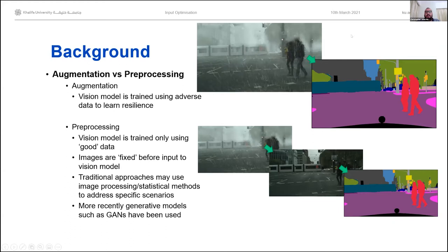Approaches for dealing with these conditions we broadly divide into two categories: augmentation and pre-processing. Augmentation is where you augment the training data — for example, if you're using a neural network to segment scenes, you might want to include data with rain or fog or other bad conditions in the training data so that the model learns to be resilient to those effects.